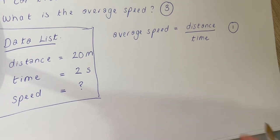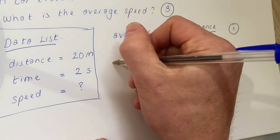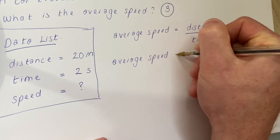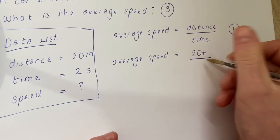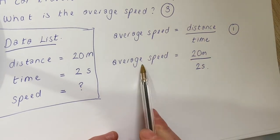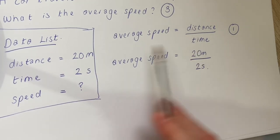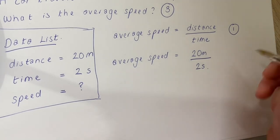The second mark is for substituting values into the equation. So what do we mean by substituting values in? Well, just the information that we have here in our data list, putting that information into the equation. So average speed, our distance we know is 20 metres and our time we know is 2 seconds. That's your second mark.